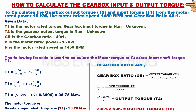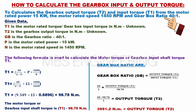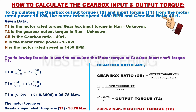We will now calculate the gearbox input and output torques. To calculate the gearbox output torque T2 and input torque T1, given a motor rated power of 15 kilowatts, a motor rated speed of 1450 RPM, and a gearbox ratio of 40 to 1.